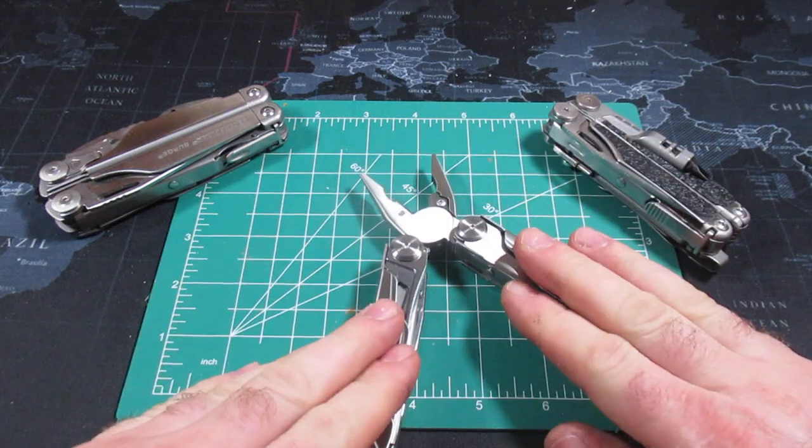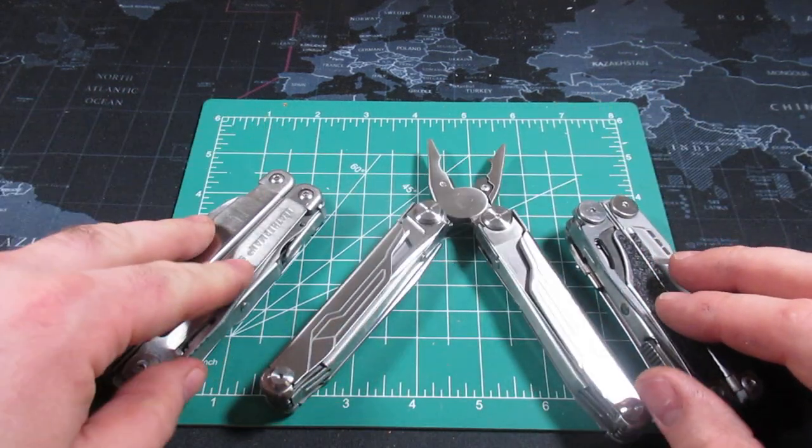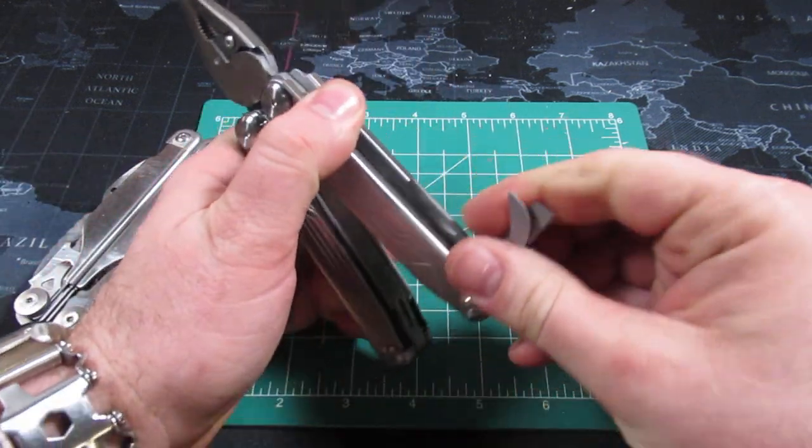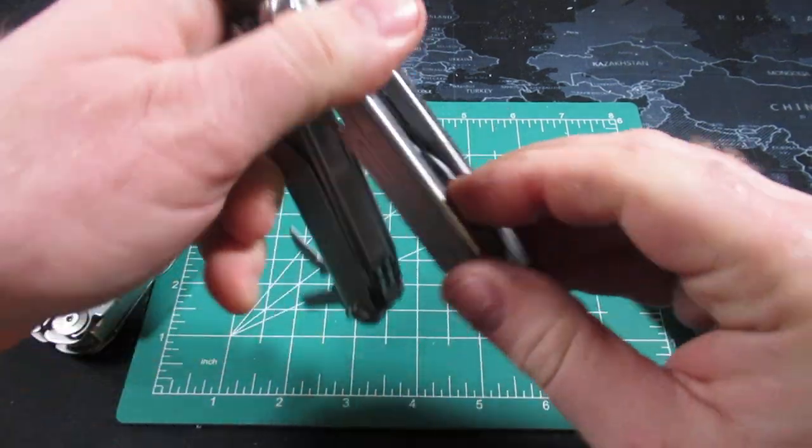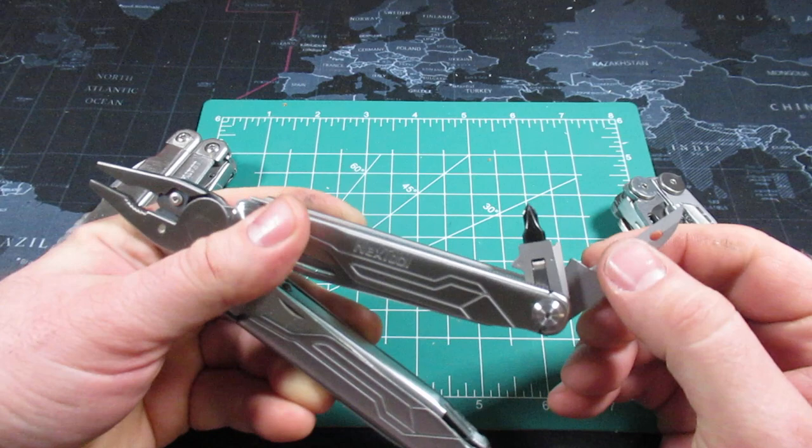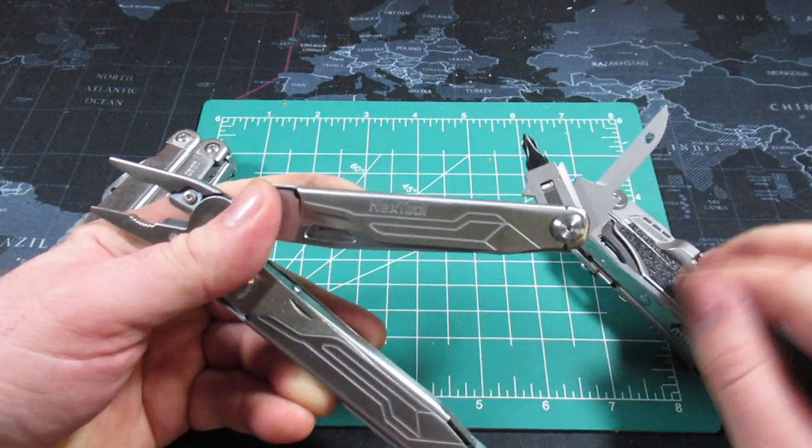So the outside implements are a little bit longer than the Wave. They're about the same size as the Surge. And then when you get to the inside implements, they're fairly similar. They're actually a little bit more similar to the Surge in that they have their scissors on the outside. So the Wave has the scissors on the inside.